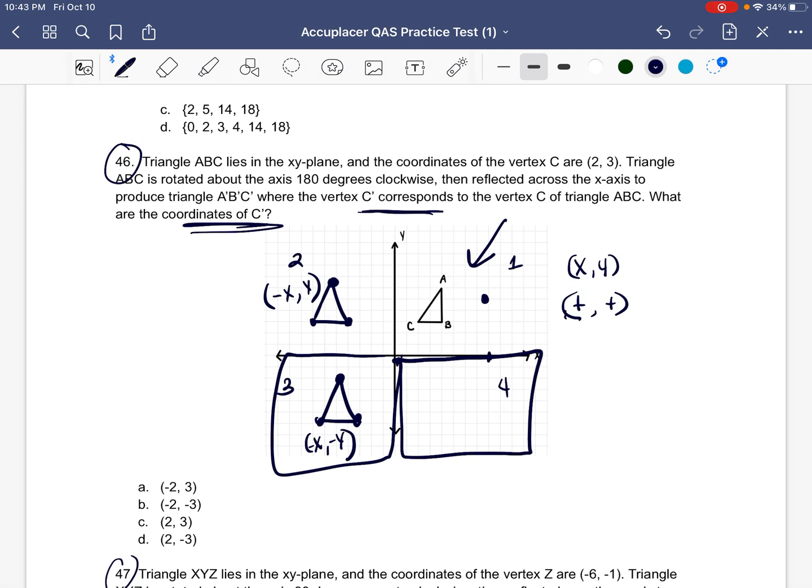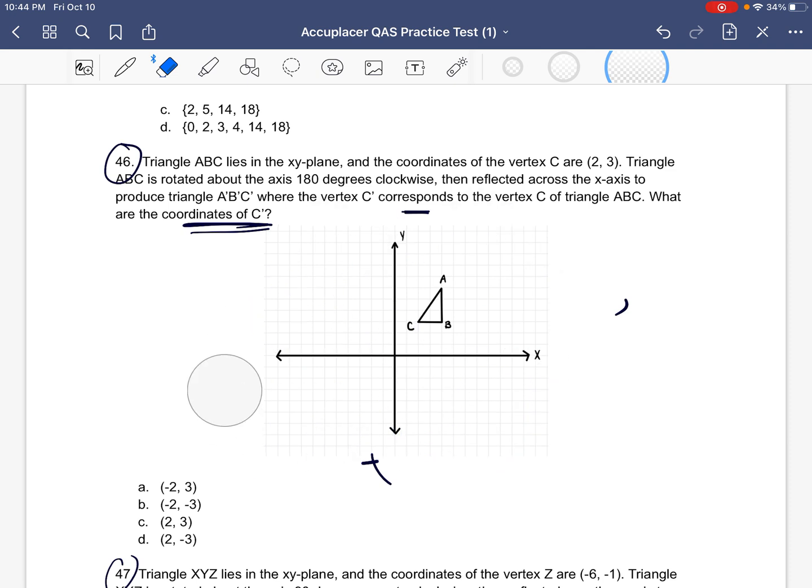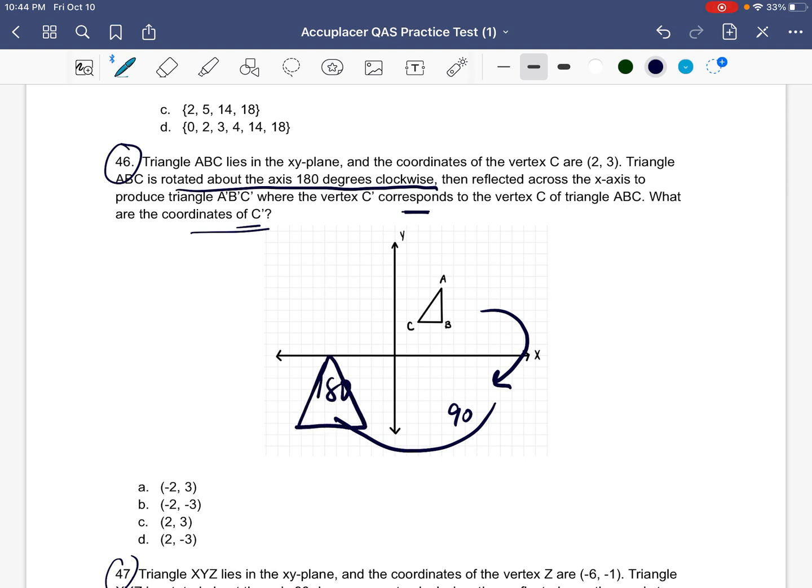And if our triangle ends up in this quadrant, then any of the points are going to be a positive X and a negative Y. So no matter what we end up doing with the triangle, flipping it, rotating it, if our triangle lands in any one of these quadrants, then we automatically know whether the X is supposed to be positive or negative and whether the Y is supposed to be positive or negative. So let's go ahead and see how that applies. So I'm going to go ahead and we're going to follow the instructions. It says it's rotated about the axis 180 degrees. Every time you rotate it, it's 90 degrees. So this would be 90 degrees, another 90 degrees would be 180. So the triangle would end up in this quadrant here. I'm going to go ahead and I'm going to highlight the quadrant where it's going to end up.